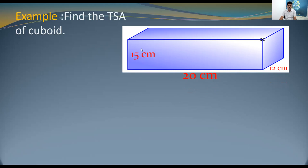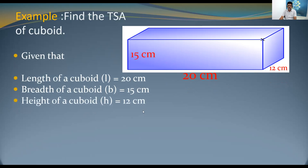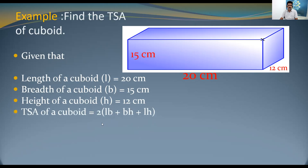The given data: length of the cuboid is 20 cm, breadth is 12 cm, and height is 15 cm. Now we apply the formula for total surface area of a cuboid, which is 2(lb + bh + lh).